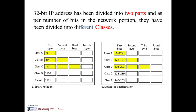Today we have to discuss the network address, broadcast address, and the host address. Before going to that topic, just a brief review about the classes of IP address. An IP address has 32 bits, and out of those 32 bits we have a network portion and the host portion. If 8 bits are used to identify a network, we call that Class A; if 16 bits are used for the network portion, we call it Class B; and if 3 bytes are used, we call it Class C.